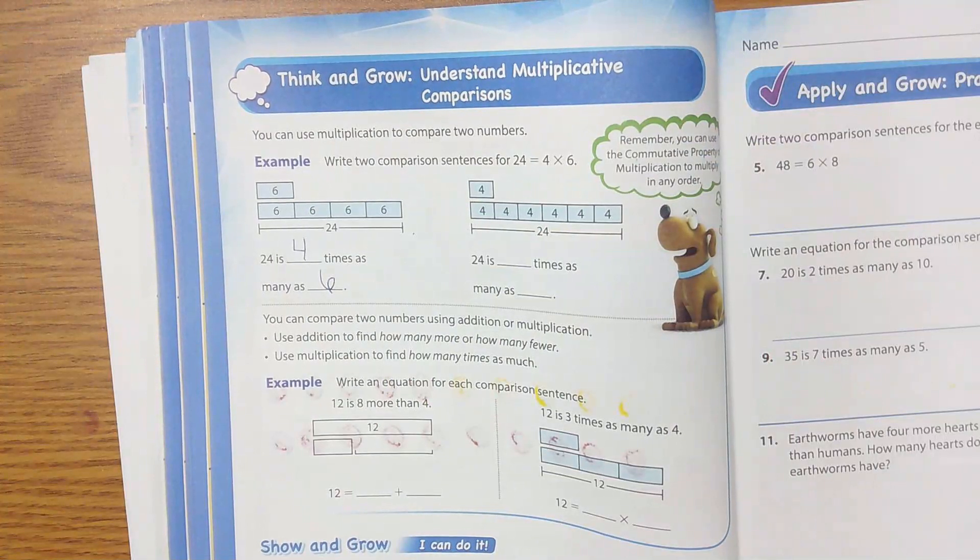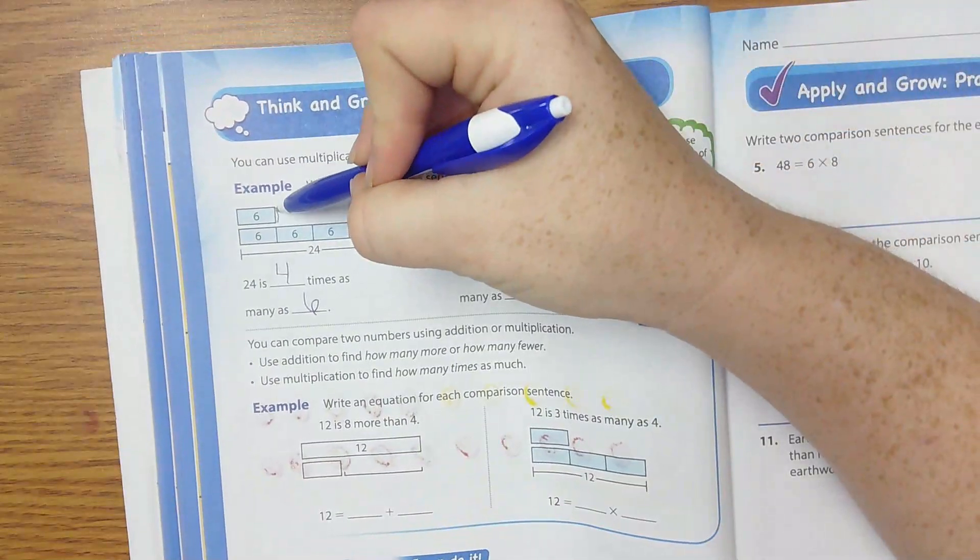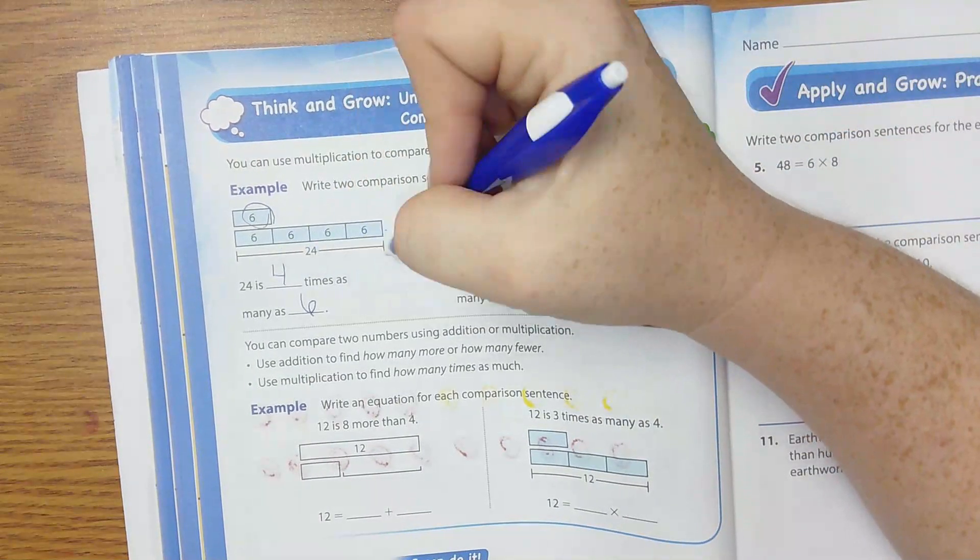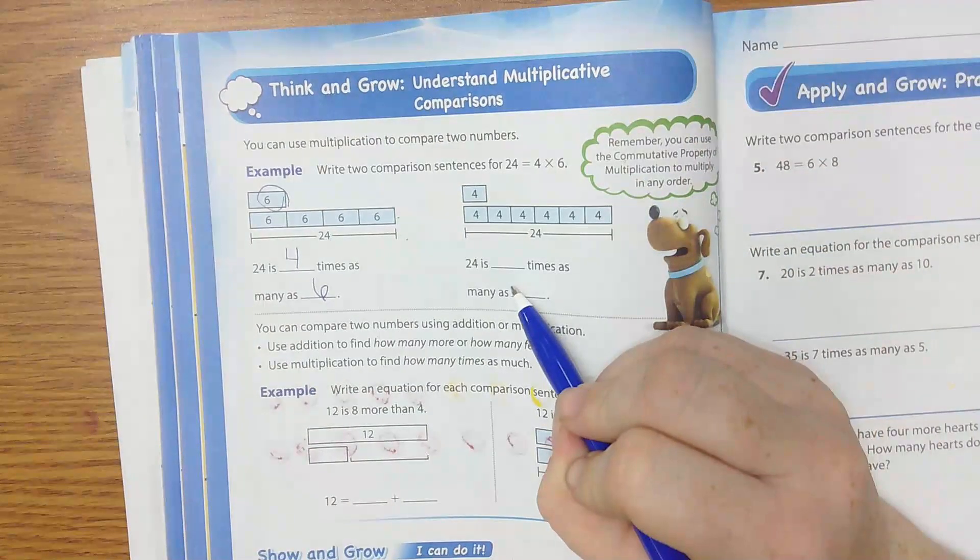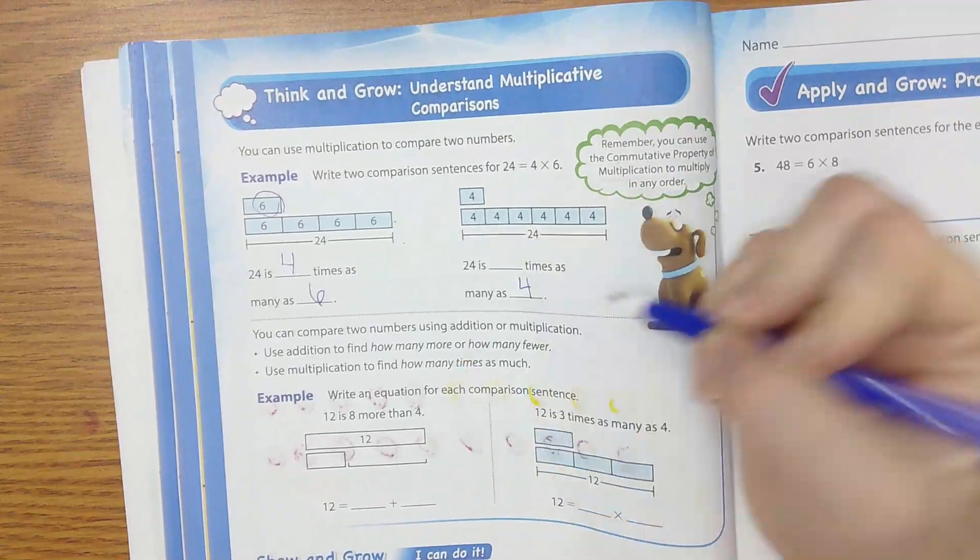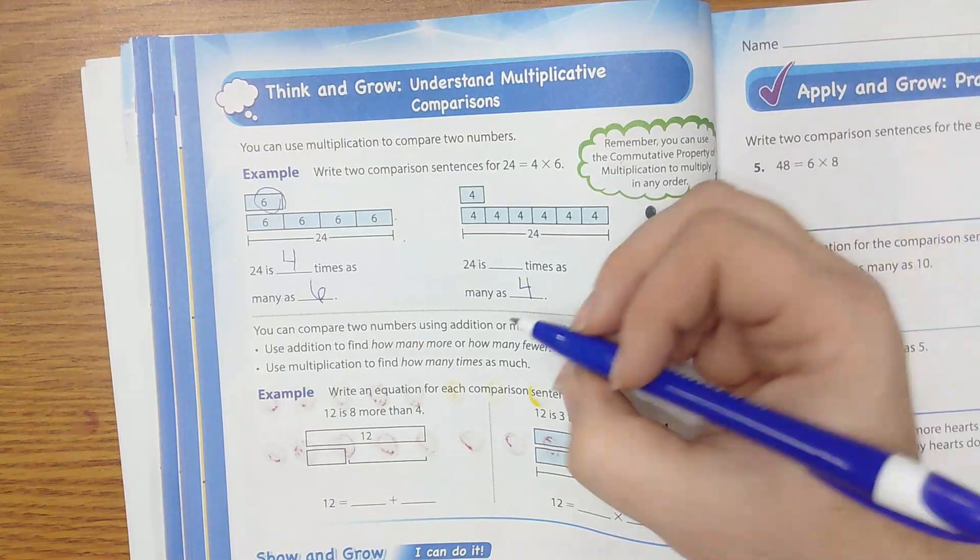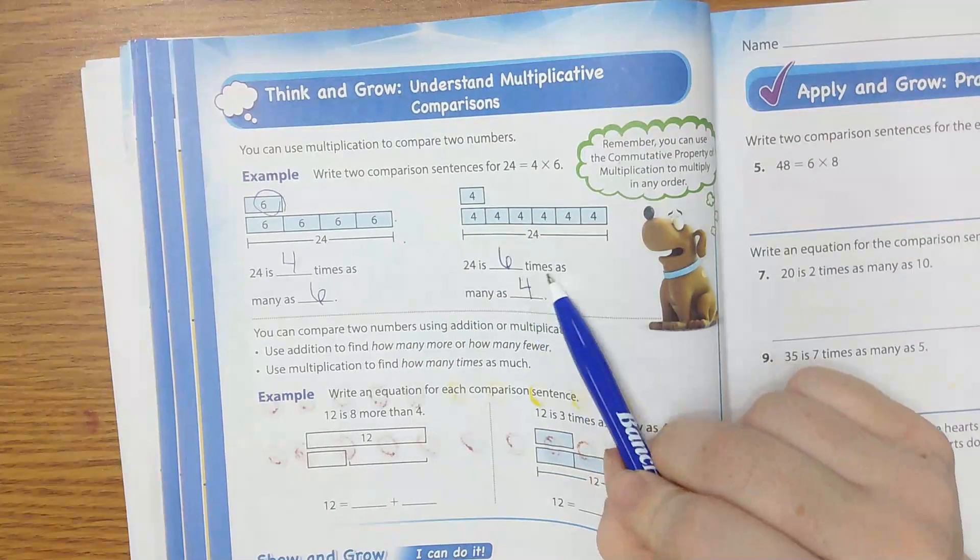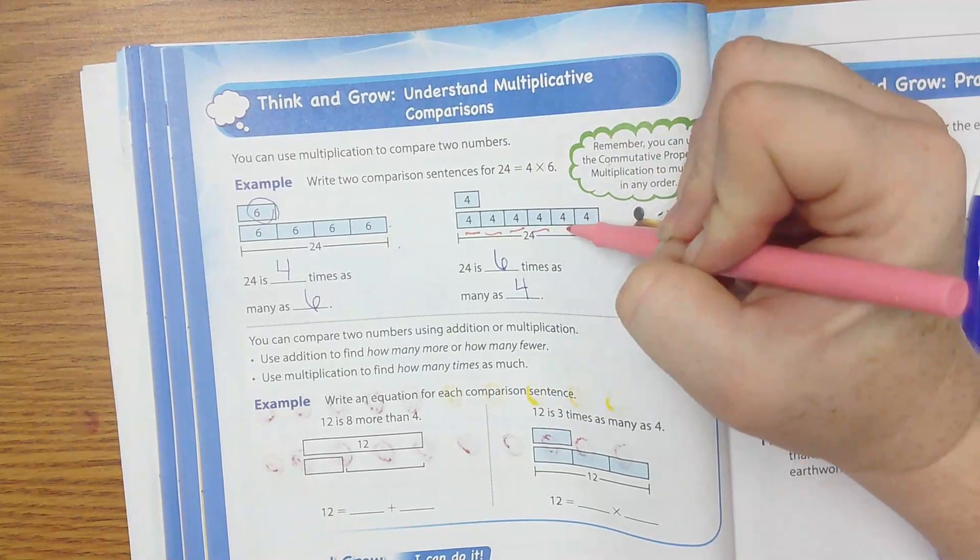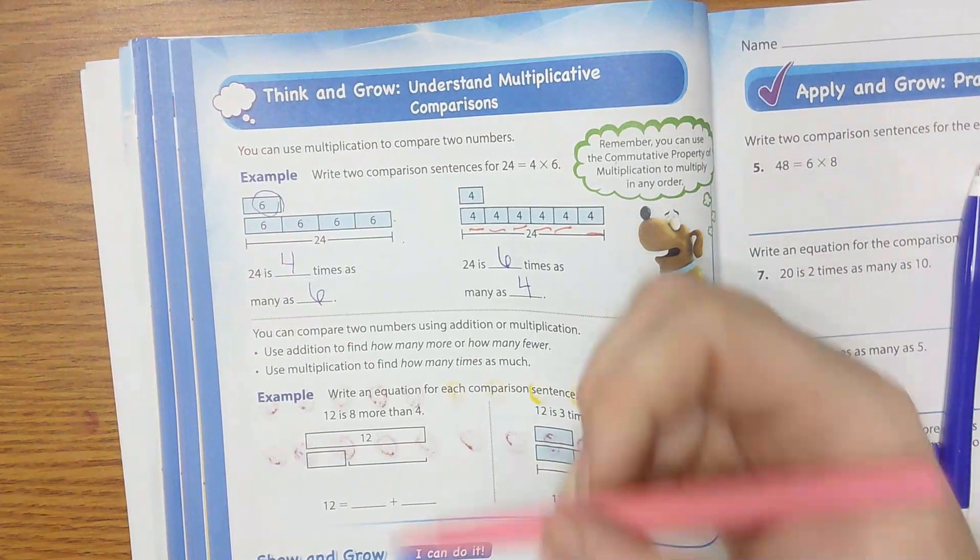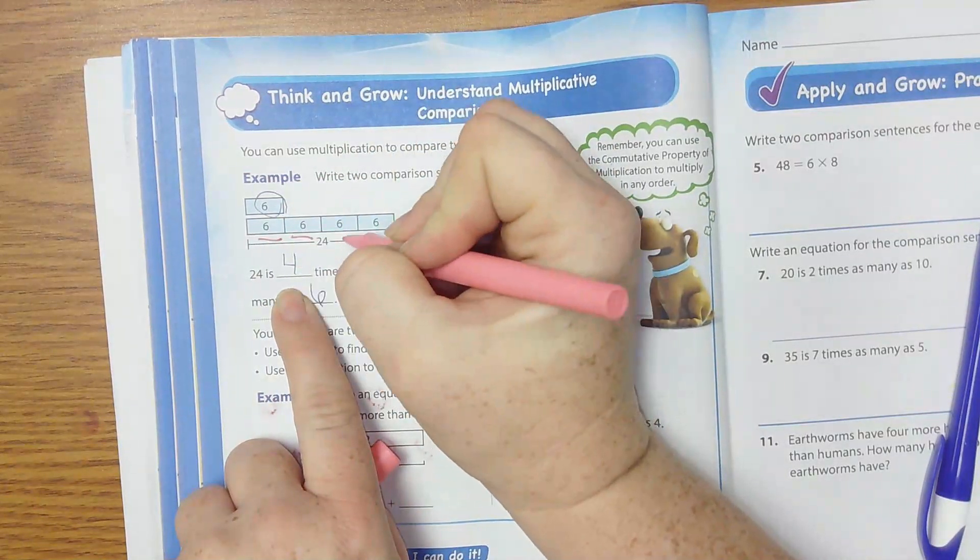Do you see that on page 70? 24 is 4 times as many as 6 because 6 is here and there are 4 of them to equal 24. 24 is how many times as many as 4? Everyone? 6. 24 is 6 times as many as 4 because there is 1, 2, 3, 4, 5, 6 fours. Over here, we did 6 at the bottom because there was only 1. And then how many times? 1, 2, 3, 4.